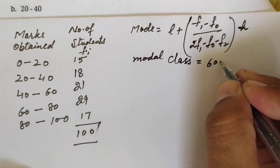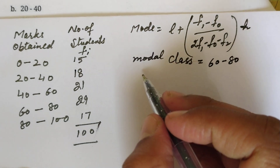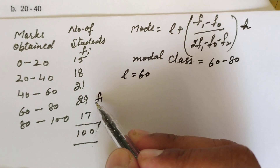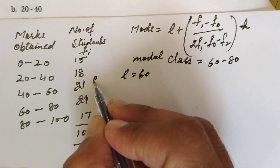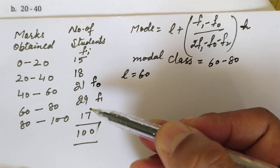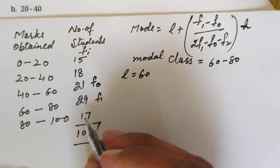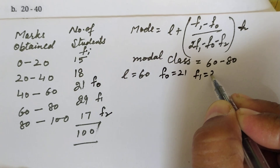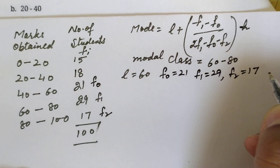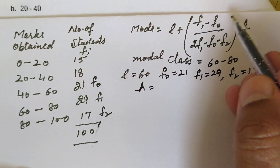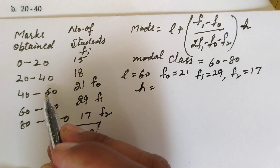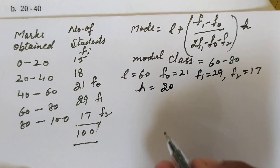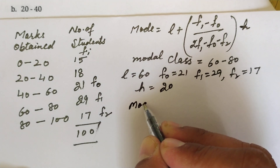Here, L (lower limit of modal class) = 60, f1 (frequency of modal class) = 29, f0 (frequency of preceding class) = 21, f2 (frequency of succeeding class) = 17, and h (class size) = 20, since upper limit minus lower limit equals 20 for each class interval.